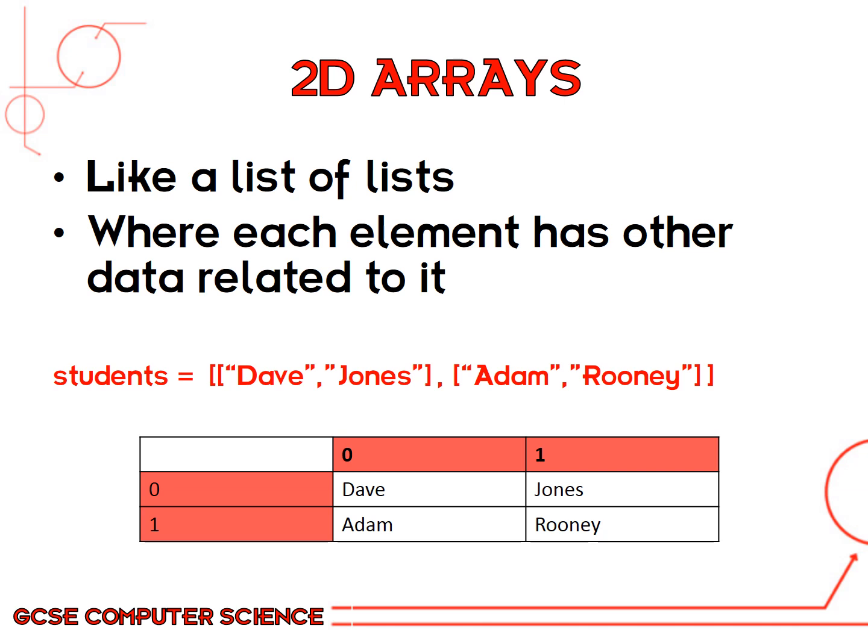If you look at this example here — students equals, within the square brackets there are other sets of square brackets — so Dave Jones is within his own set of brackets with a comma in between each element. That's how you'd set it up in Python. It's like a list of lists, and this array would be structured in a table like you can see.